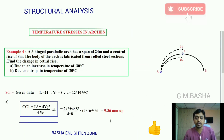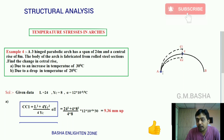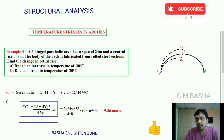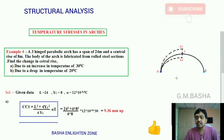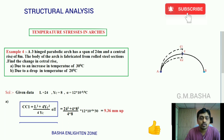A three-hinged parabolic arch has a span of 24 meters from A to B. Taking down the given data: L = 24 meters. The central rise from the base line to crown C is given as 8 meters, so yc = 8 meters.